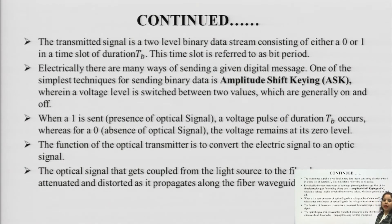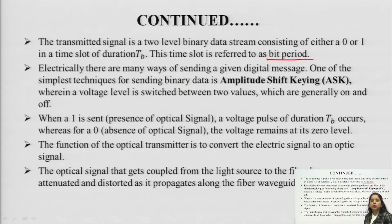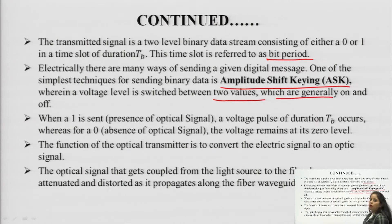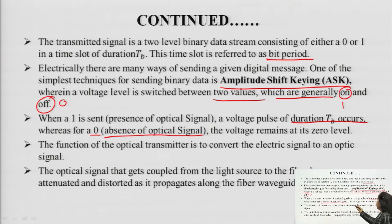The transmitted signal is a two-level binary data — 1 and 0 — in a time slot equal to T_b, also referred to as the bit period. One of the simplest techniques used is amplitude shift keying (ASK), wherein a voltage level is switched between two values — on and off. When a 1 is sent, meaning presence of optical signal, a voltage pulse of duration T_b occurs. For a 0, meaning absence of optical signal, the voltage remains at its 0 level.